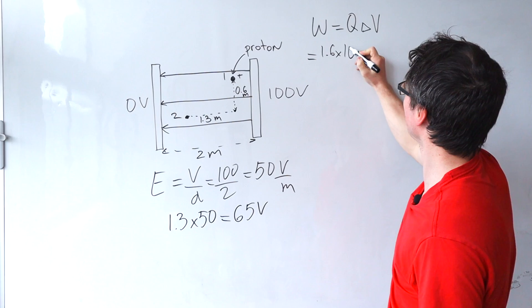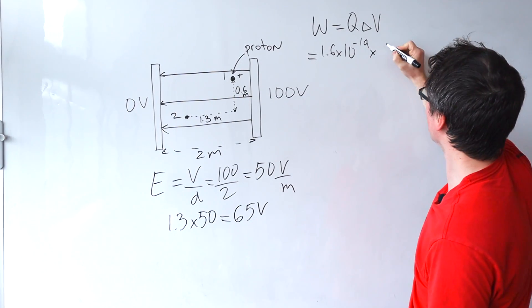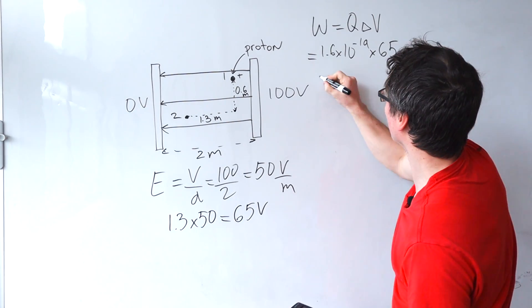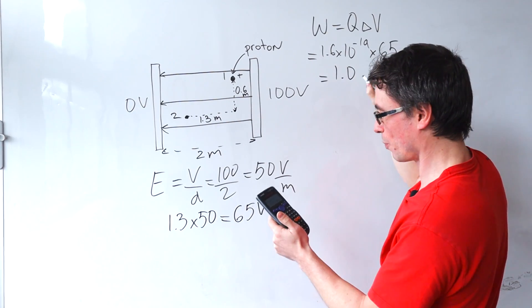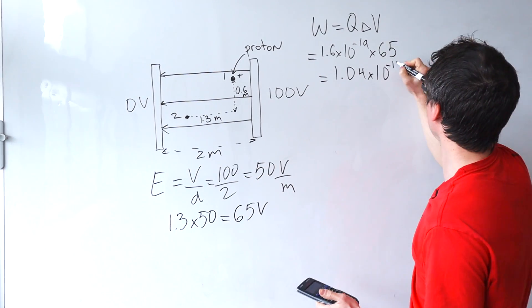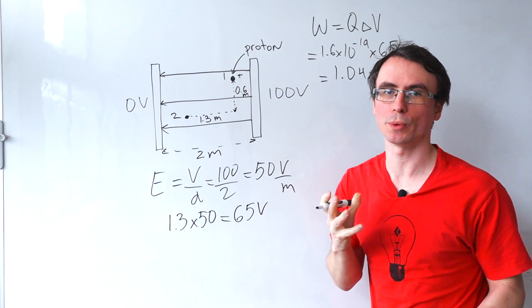Okay well because this particle is a proton this will be equal to 1.6 times 10 to the power of minus 19 multiplied by 65 giving me an answer of about 1.04 times 10 to the power of minus 17 joules.